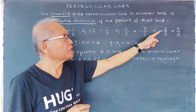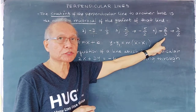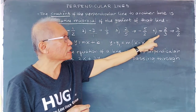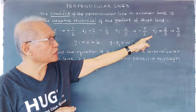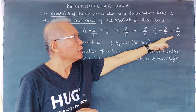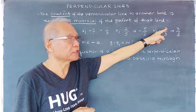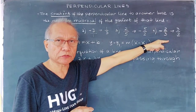For negative 2 thirds, the negative reciprocal will be positive. We swap numerator and denominator: the result is positive 3 over 2.